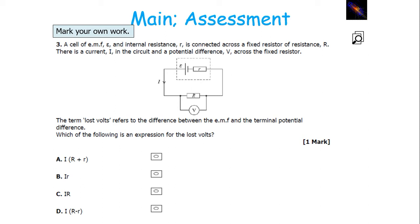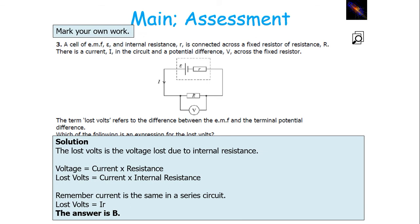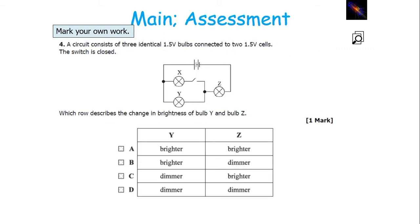In the next question about how to work out the expression for lost volts: lost volts is the voltage due to internal resistance. We know that V equals IR, so lost volts is going to be I times R, but the R in this example is the internal resistance of the circuit, so therefore it's going to be I times small r. So, lost volts equals I times small r.